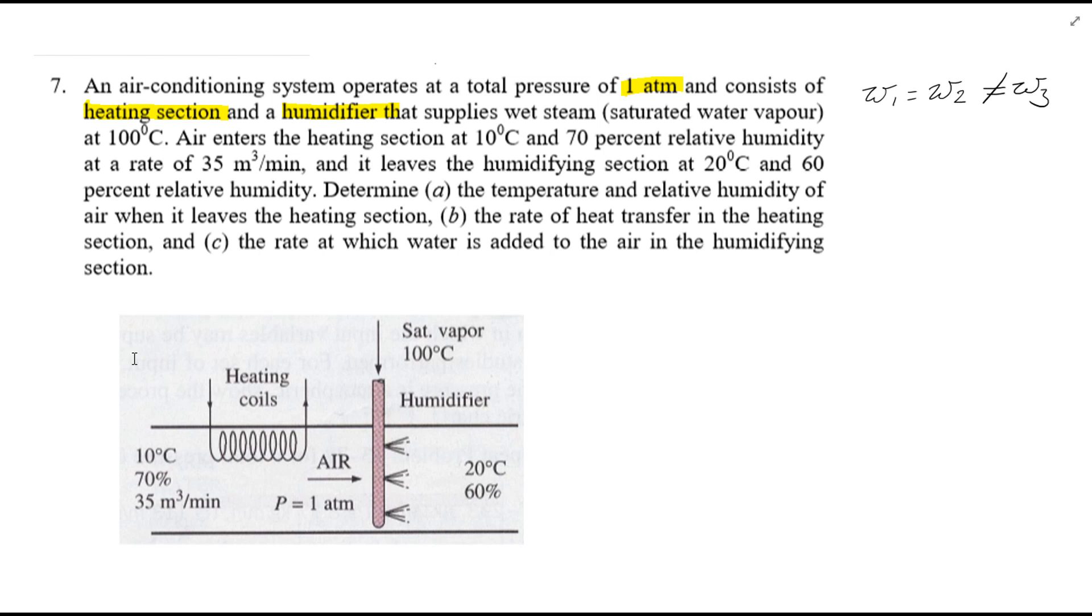So you can see here now on the diagram we have got point 1 here, point 2 here and point 3 here. We are given T1, relative humidity at 1 equal to 70% and the volume flow rate in meters cubed per minute. For part A we are asked to find the temperature and relative humidity of the air when it leaves the heating section.